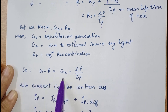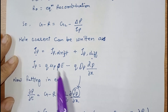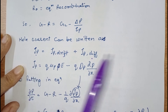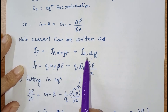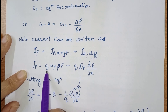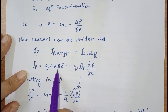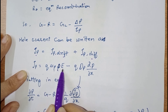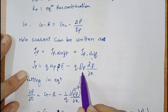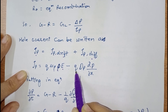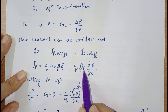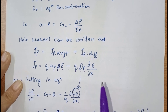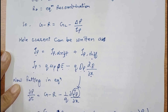We can substitute g − r = gL − Δp/τp into the continuity equation. The hole current density jp can be written as the drift current density plus the diffusion current density: jp = q·p·μp·E − q·Dp·(∂p/∂x), where μp is the mobility of holes, E is the applied electric field, and Dp is the diffusion coefficient.